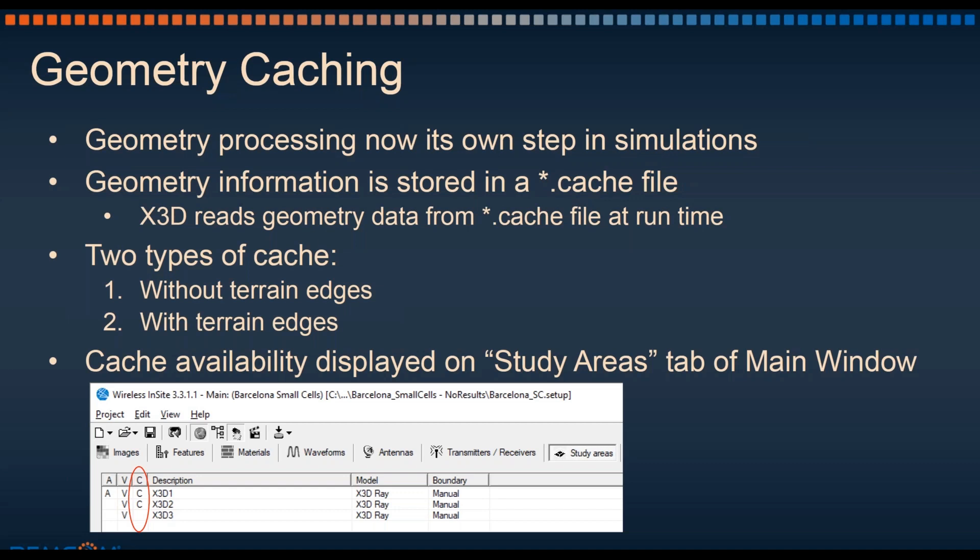The second major feature is geometry caching. Geometry processing is now its own step in simulations, so when that runs, it will create a .cache file in the project directory. When X3D goes to run the actual study area, it reads the geometry data from the cache file rather than processing the geometry at the beginning of the simulation every time.